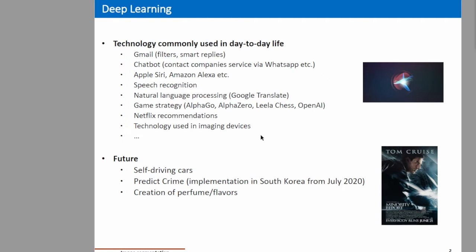I will talk a bit generally about deep learning. We know that we are using deep learning daily — for example, when we are sending emails, we can see that we have some spam filters. This is deep learning. We are also using it in speech recognition and natural language processing, like Google Translate, in Netflix when we are at home, and in other technologies used in imaging devices.